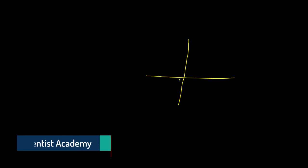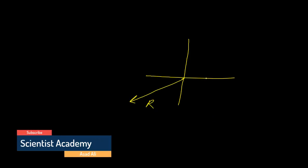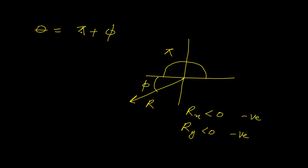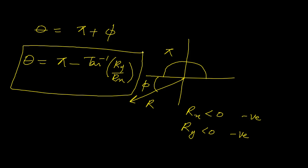Now let us discuss the third quadrant. Here phi is this angle, and theta equals pi plus phi. This holds when Rx is negative and Ry is also negative. So theta equals pi plus tan inverse (Ry / Rx). Remember, the direction is always positive — it is not negative.